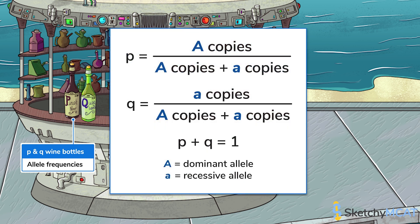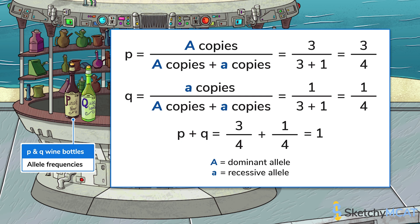To calculate the frequency of an allele, you divide the number of copies of that allele in a population by the total number of copies of all alleles at that locus. For example, in a population of two diploid individuals, there are four total copies of every locus, because both individuals carry one locus on each of their two chromosomes. If one individual is heterozygous at a locus and one individual is homozygous dominant, there will be three copies of the dominant allele in the population — one from the heterozygote and two from the homozygote.